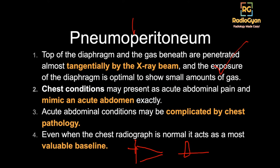The second reason is that chest conditions can simulate acute abdominal pain and mimic an acute abdomen. The third reason is that abdominal conditions can be associated with chest findings — for example, a pleural effusion in acute pancreatitis. In pancreatitis, the pleural effusion is commonly left-sided. So acute abdominal conditions can have chest pathologies.